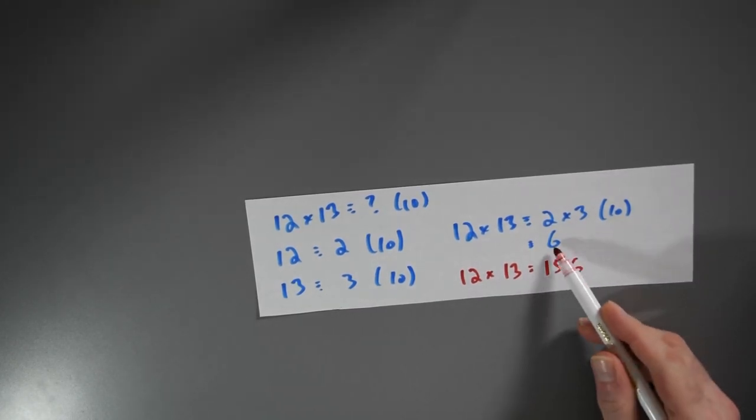And sure enough, right, 6 is congruent to 156 modulo 10. So that seems to be fine. Let's try another example.